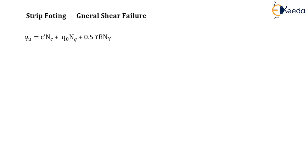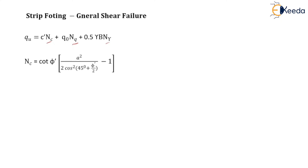The formula given by Terzaghi is: Qu = C'·Nc + q·Nq + 0.5·γ·B·Nγ. Here Nc, Nq, and Nγ are called bearing capacity factors. Nc is equal to cot φ' multiplied by A squared divided by 2·cot²(45° + φ'/2) minus 1.